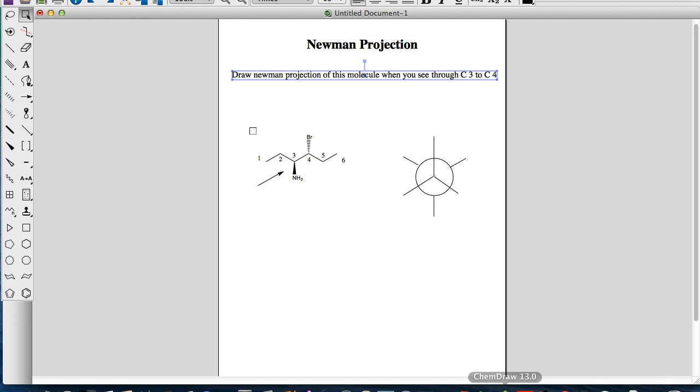So we go back to the Newman projection. Remember, we have an amine group pointing up, so that would be here. We will have a hydrogen pointing away from you on the carbon-3. So this is the carbon-3. Remember, that would be hydrogen.